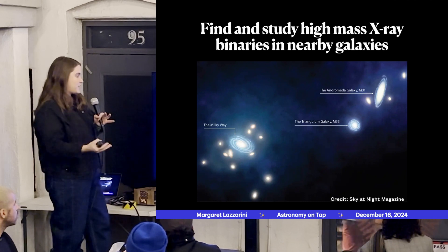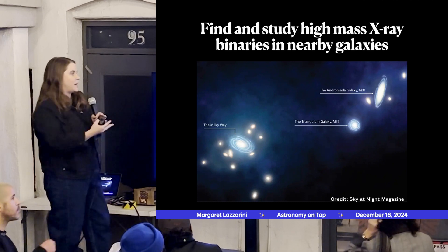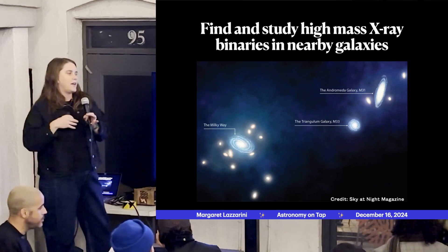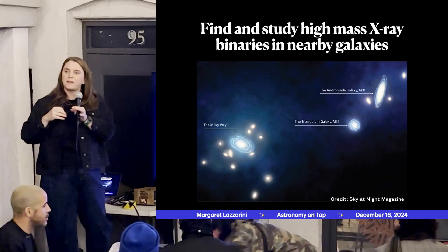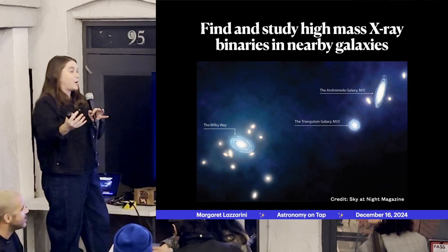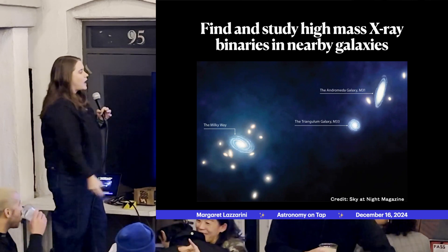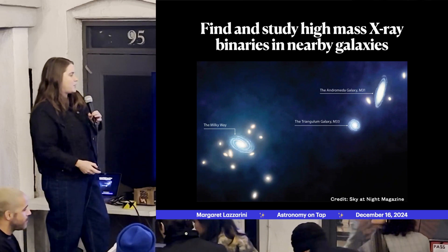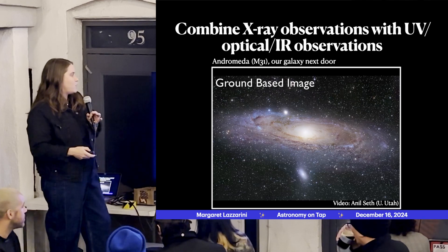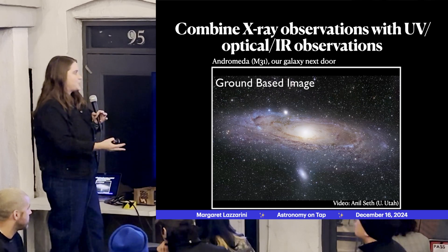To study this complicated binary stellar evolution process, I use observations of high-mass X-ray binaries in nearby galaxies. Looking at galaxies outside the Milky Way lets us get a snapshot of the whole population of these stars at once, while they're close enough for good, crisp images. I've worked a lot with the Andromeda Galaxy (M31) and the Triangulum Galaxy (M33), our two spiral sister galaxies, combining X-ray observations from Chandra with optical observations from other telescopes.